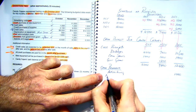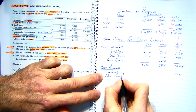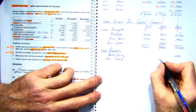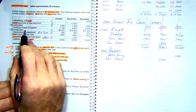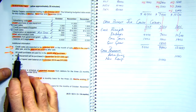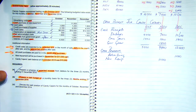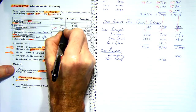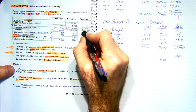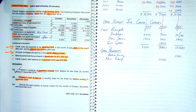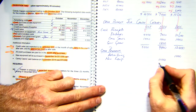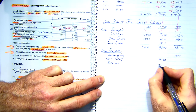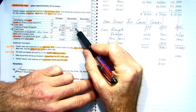Cash purchase of new equipment — that is November, so I've got $11,000 in November. We've got credit purchases of supplies. It says all credit purchases are paid for in the month after purchase, so if purchasing in October I'm paying in November, and purchasing in November means paying in December. So I need to include those two: supplies of $2,100 in November and $4,000 in December.